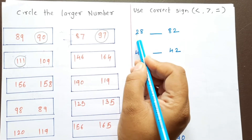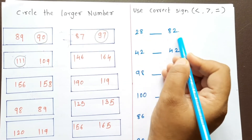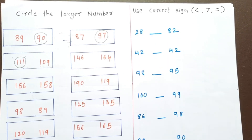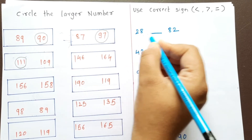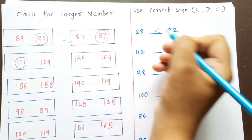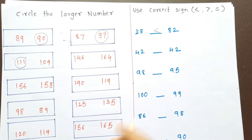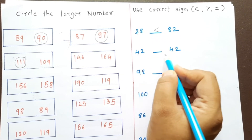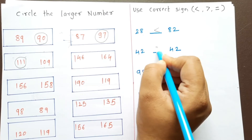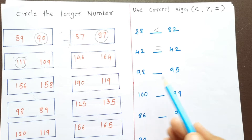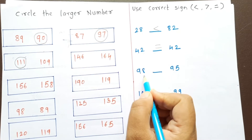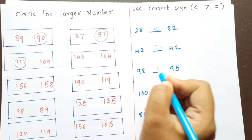The first example is 28 and 82. 82 is the larger number, so 28 is less than 82. Next, 42 and 42 — they are equal. Next, 98 and 95 — 98 is greater than 95.